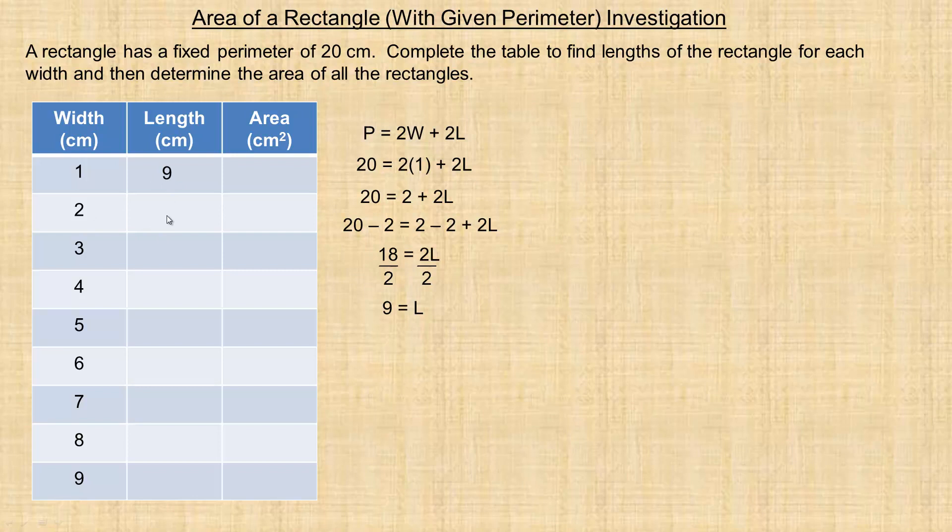Now I want to find if the width is 2, what's the length going to be? Same formula again—we'll put 2 in place of the perimeter—no, 20 for the perimeter—and now we're going to put 2 in place of the width. So 2 times 2 is 4. Again, I want to isolate the 2L term. The 4 is added to the 2L, so I want to subtract 4 from both sides, so that's 0 on the right here.